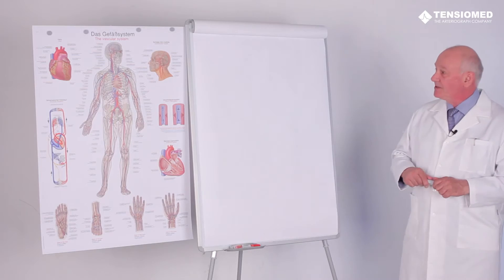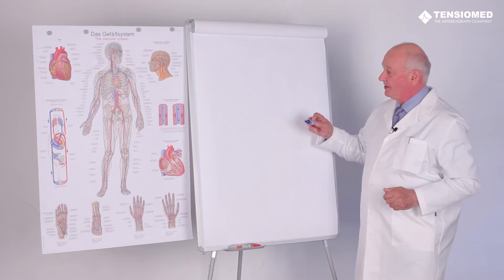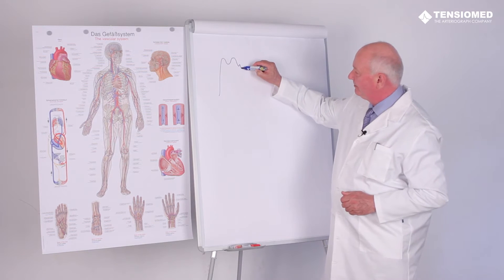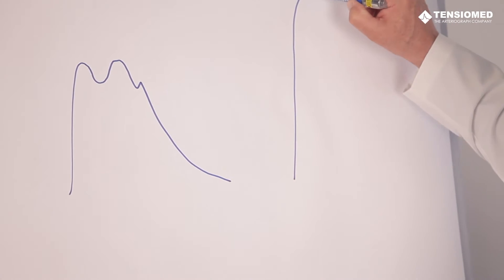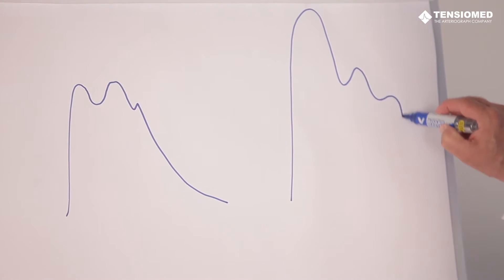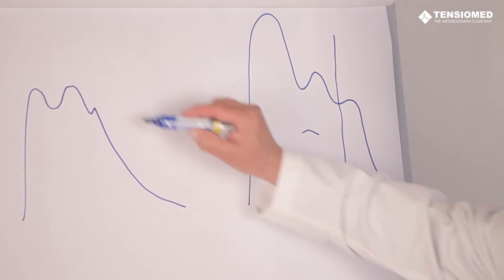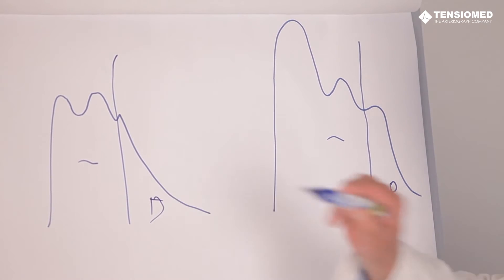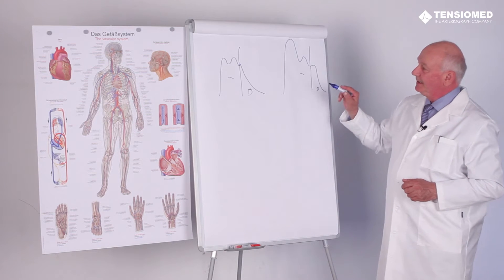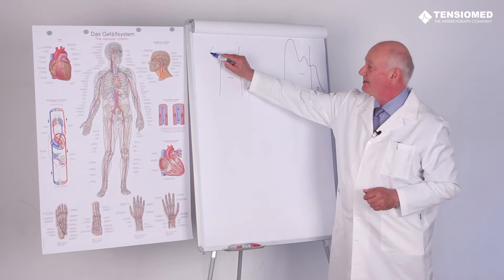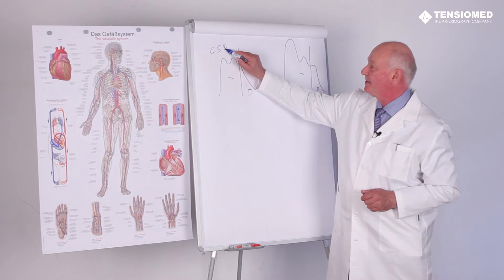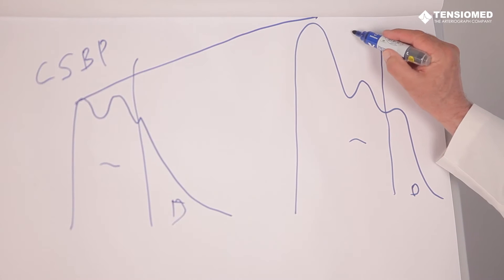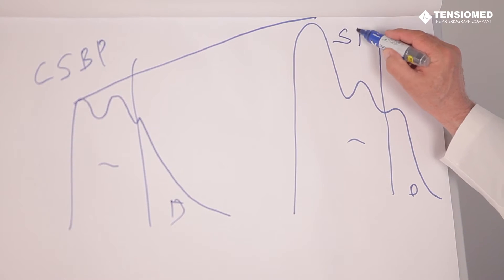Physiologically, if I draw the aortic pressure curve and the brachial pressure curve - this is systole, this is diastole - when measuring aortic blood pressure, the central systolic blood pressure is always lower compared to the peripheral brachial blood pressure because of physiological pulse pressure amplification.